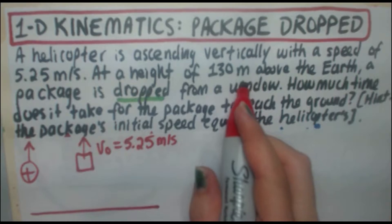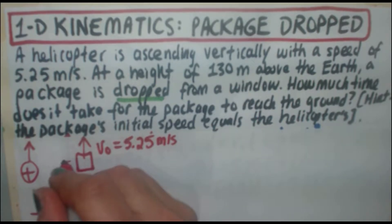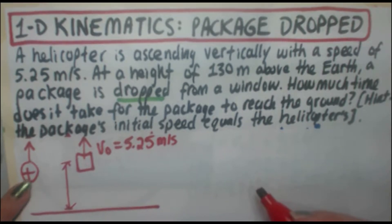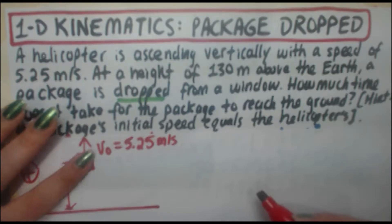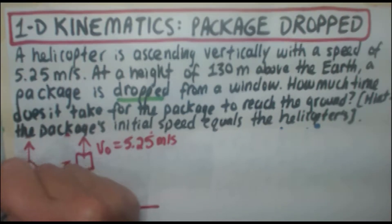We know that it's a height of 130 meters above the Earth. That's this right here. Now pay close attention to this part. You remember up is positive. When this package is dropped, it's going to travel down. Therefore it's traveling in the negative direction. It's going to have a negative displacement. So let's go ahead and write that. So d is actually minus 130.